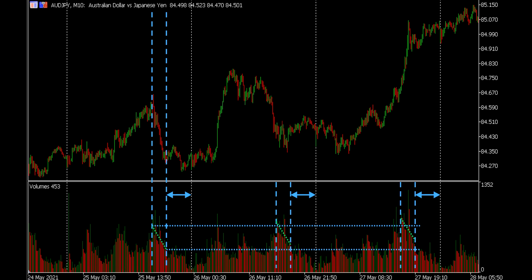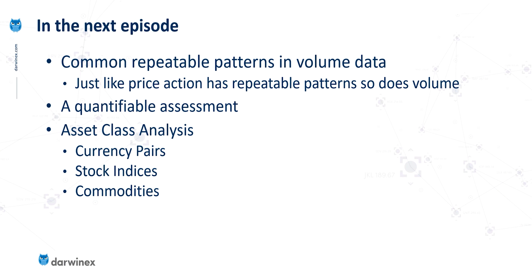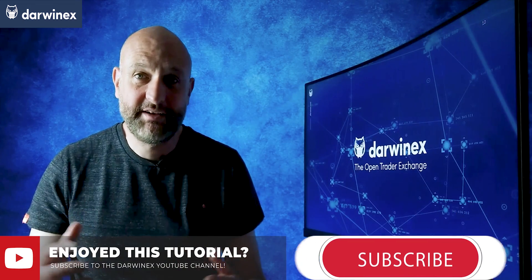Of course, what I've done here is just a visual assessment to explain the concept. In reality, you would want to do something more quantifiable and to measure that relative behaviour as part of the underlying daily patterns. And that brings me on to the next episode, where I'll be doing exactly that for a number of asset classes, to show you the differences in the underlying patterns and explain how we can, in a quantifiable way, assess that relative volume to help us with decisions in each of those classes. As part of that, I'll be covering a number of currency pairs, stock indices, and also a couple of commodities. So be sure to tune in for that next episode.